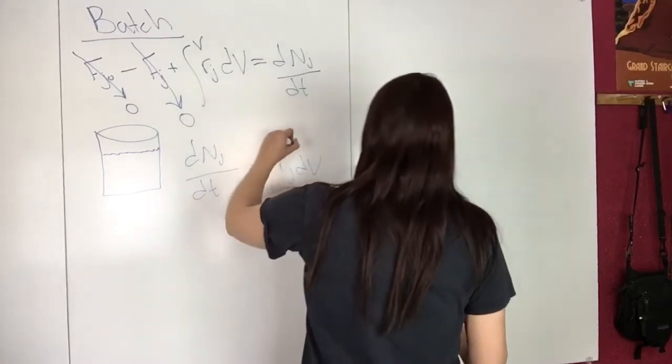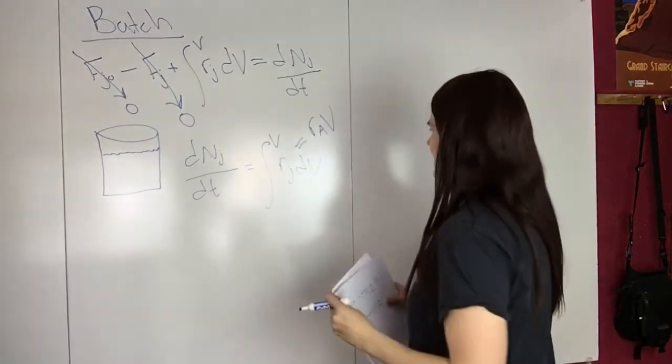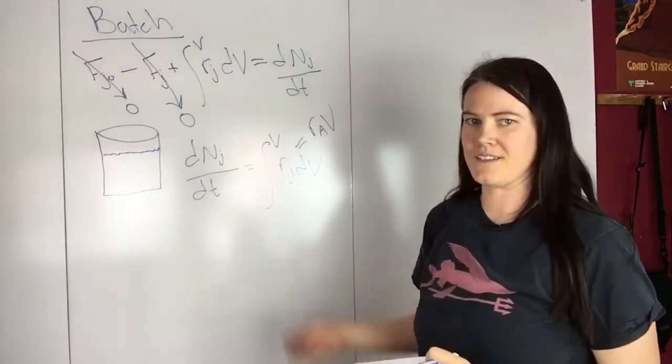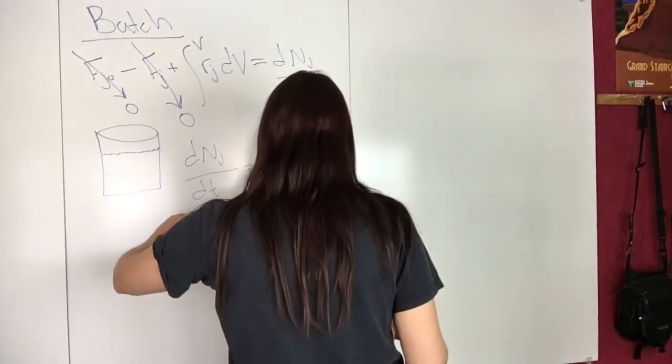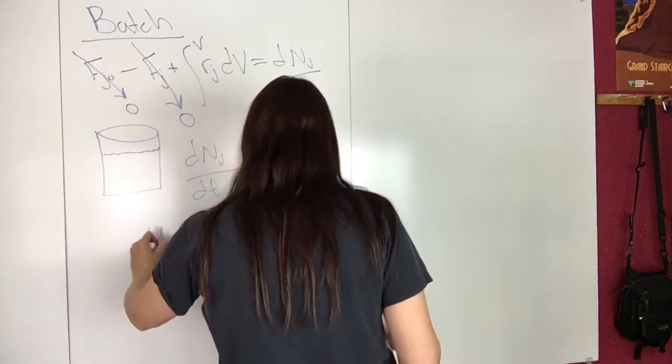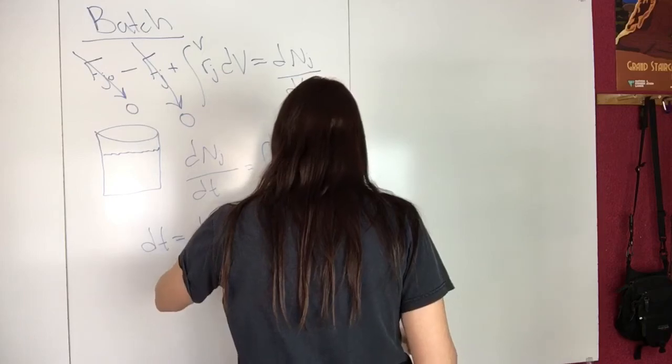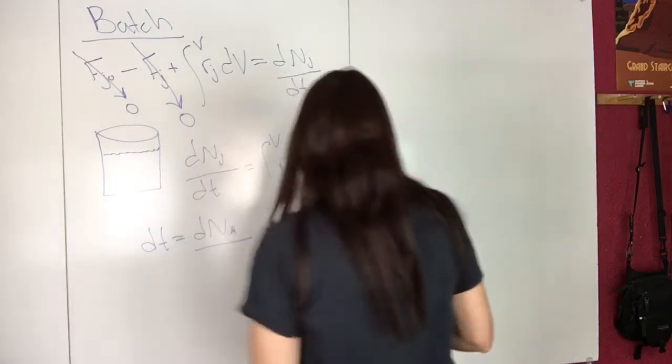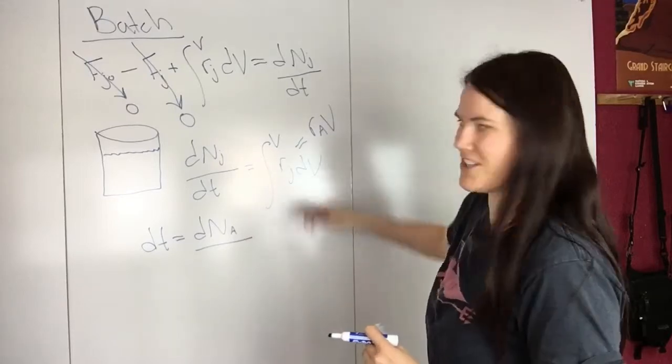So then you end up with, well, this can turn into this because you pull RJ out and then this is what you're left with. And so then you can rewrite this. And I also kind of switched the J to an A,